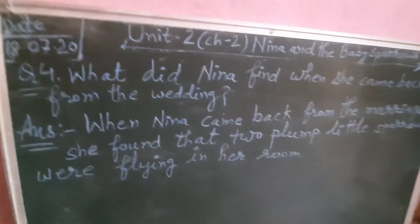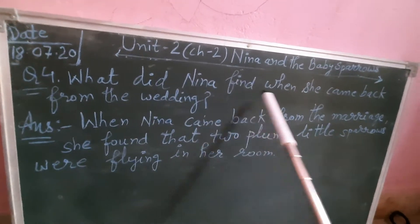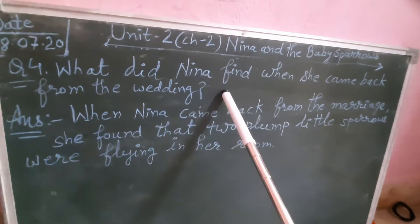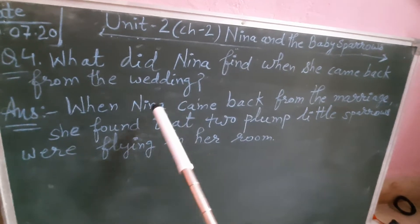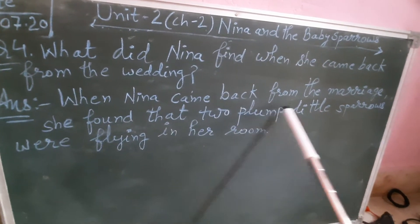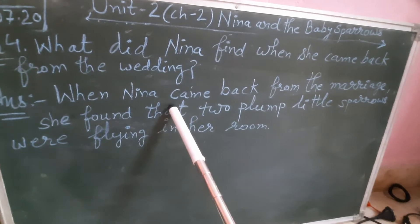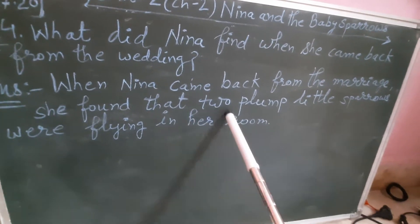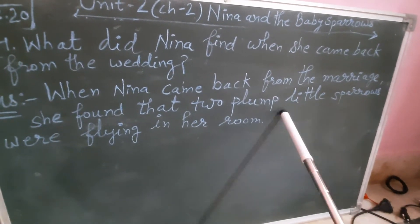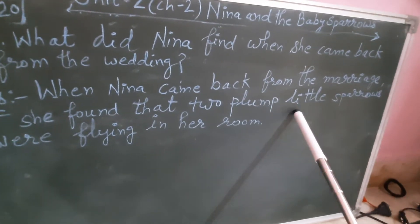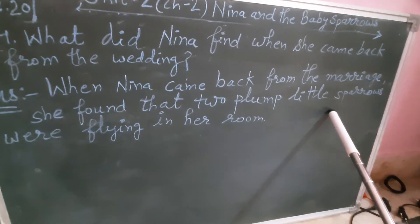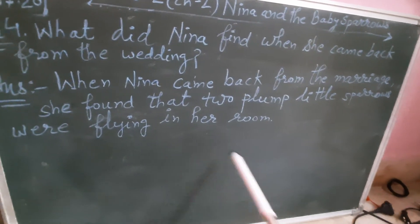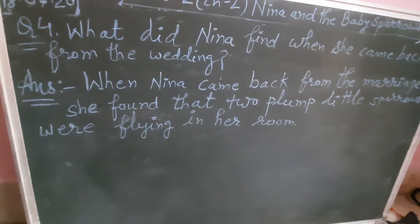Question number four: What did Nina find when she came back from the wedding? Jab Nina shaadi se waapis aayi toh usne kya paaya? When Nina came back from the marriage, she found that two plump little sparrows were flying in her room. Woh chhotey aur moote sparrows uske room mein ud rahi thin. Aaj ke liye itna hi, thank you, have a nice day.